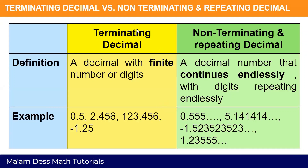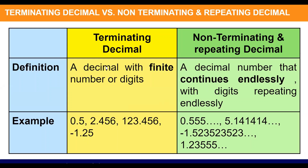Let us discuss terminating versus non-terminating and repeating decimals. A terminating decimal is a decimal with a finite number of digits. Examples: five tenths; two and four hundred fifty-six thousandths; one hundred twenty-three and four hundred fifty-six thousandths; and negative one and twenty-five hundredths.